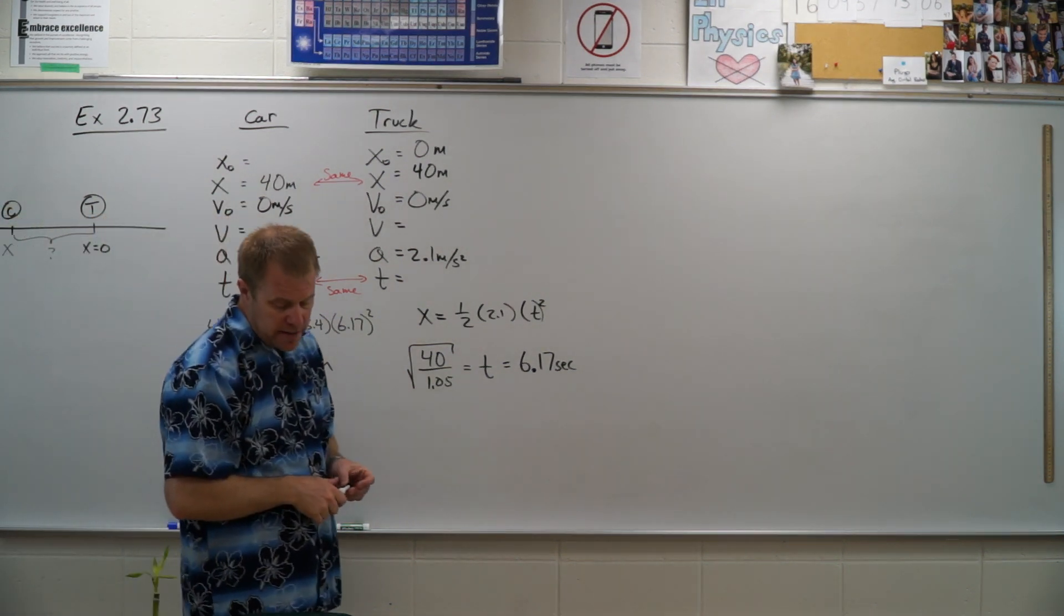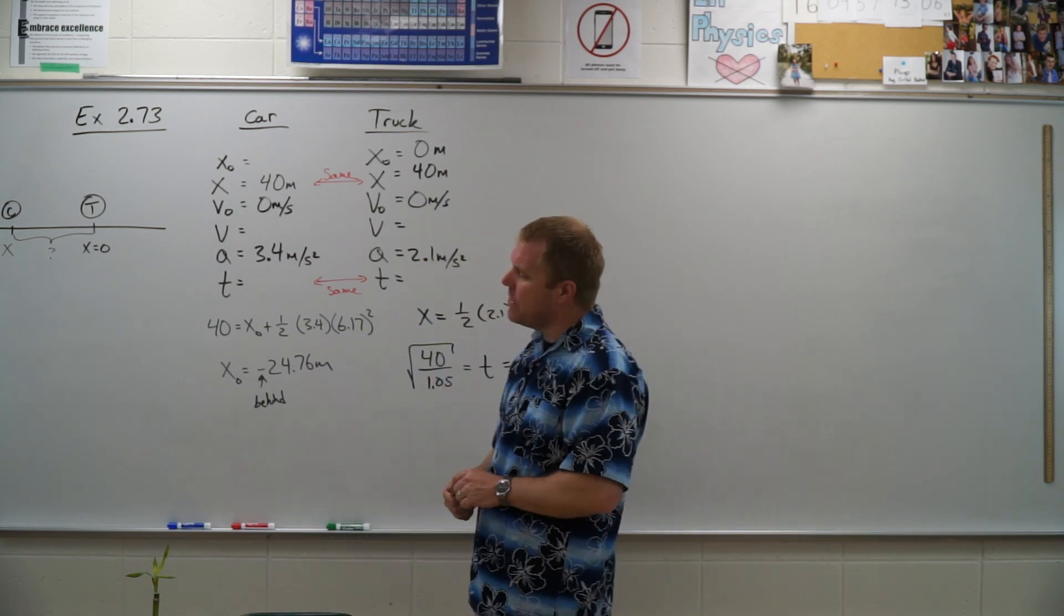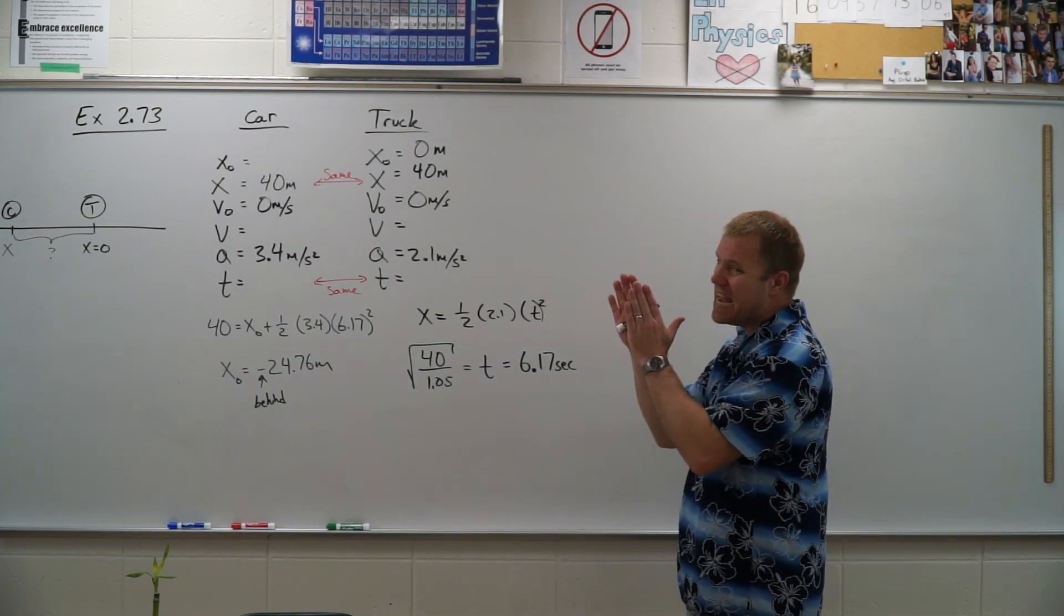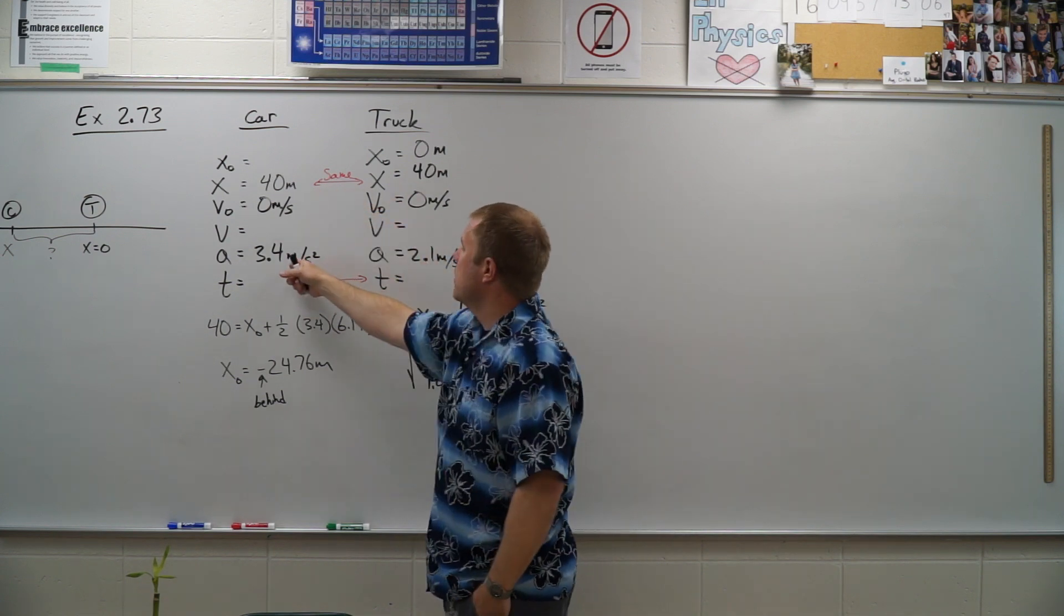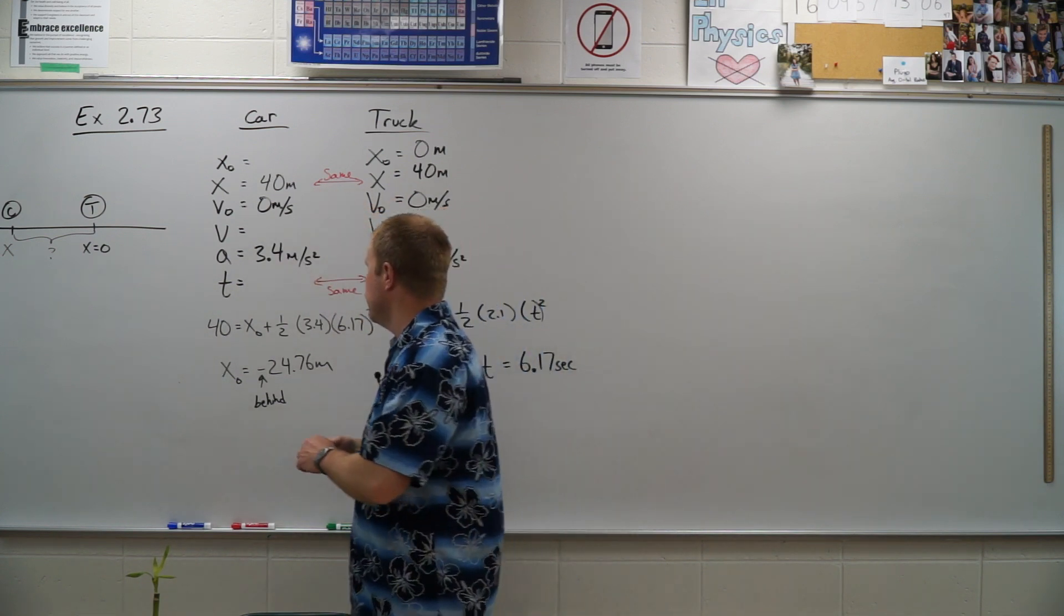Part C wants us to find, what is the speed of each of them when they are abreast? So what is the speed when they're at the same location? That 40 meter mark. So I just need to go ahead and solve for these two v's.